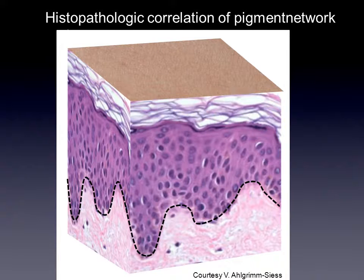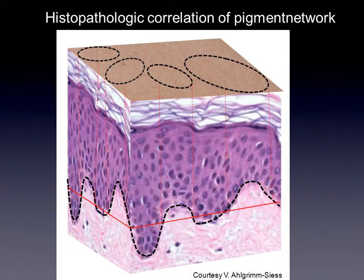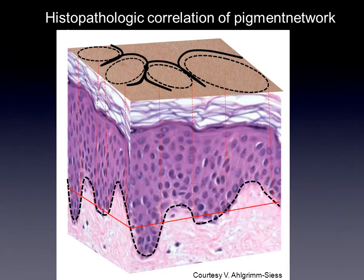Let's look at this scheme of the pigment network of the normal skin. We have the papillae, and if we look in the horizontal plane of dermoscopy, this corresponds to circles forming a reticular network in pigmented lesions.